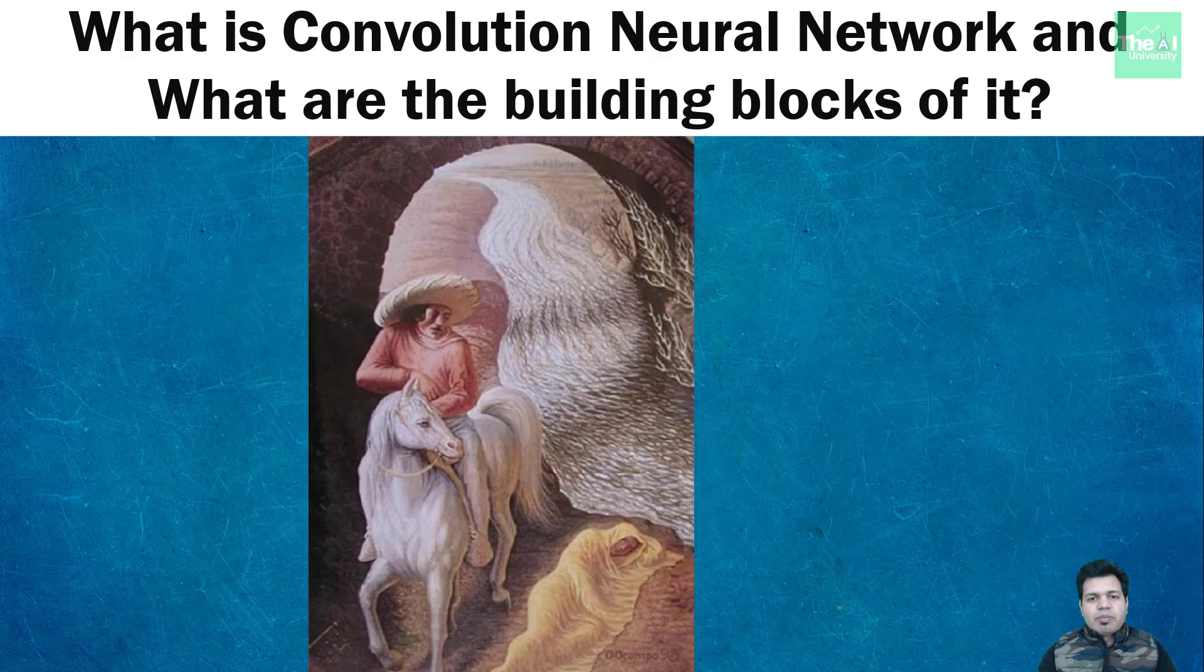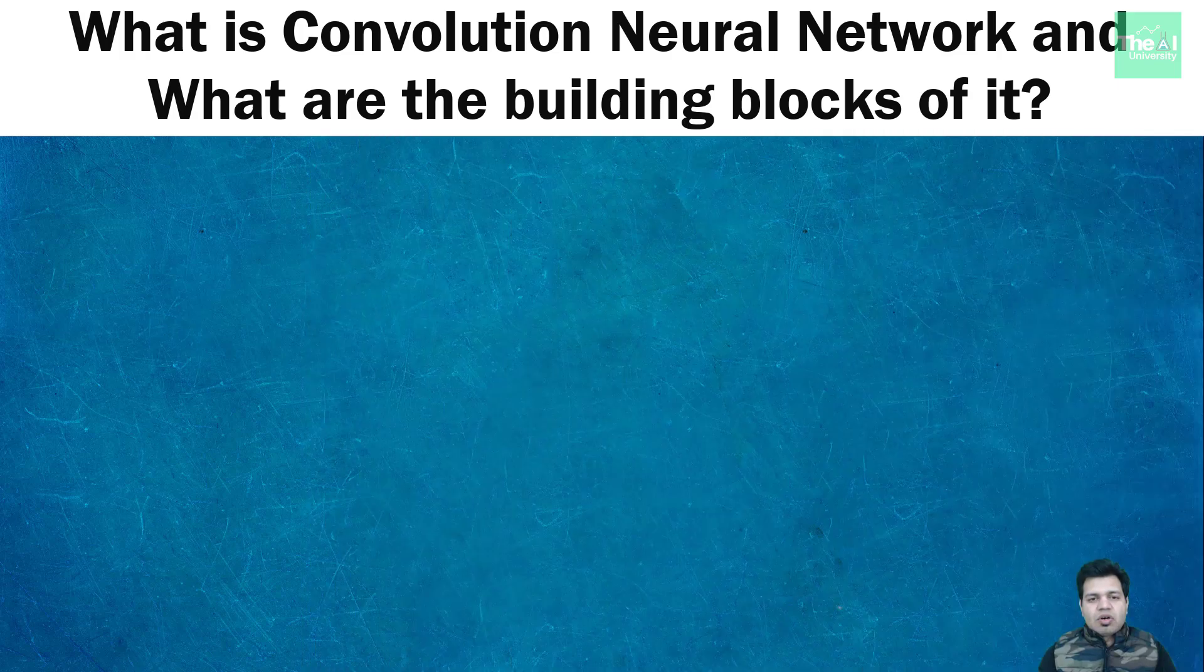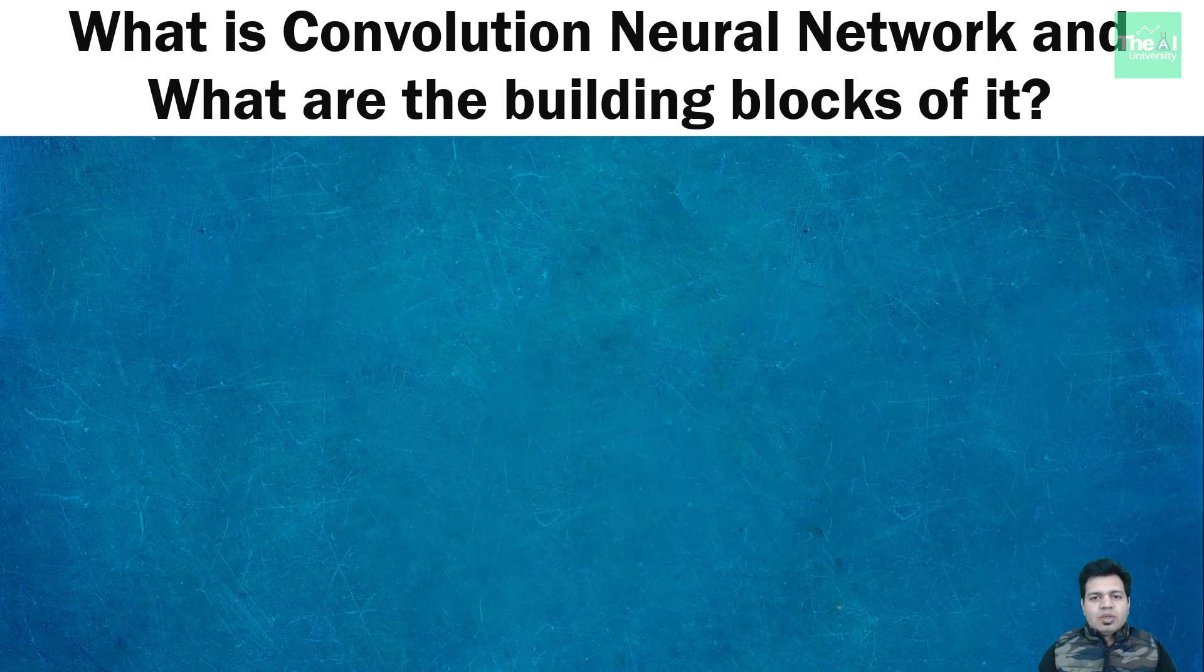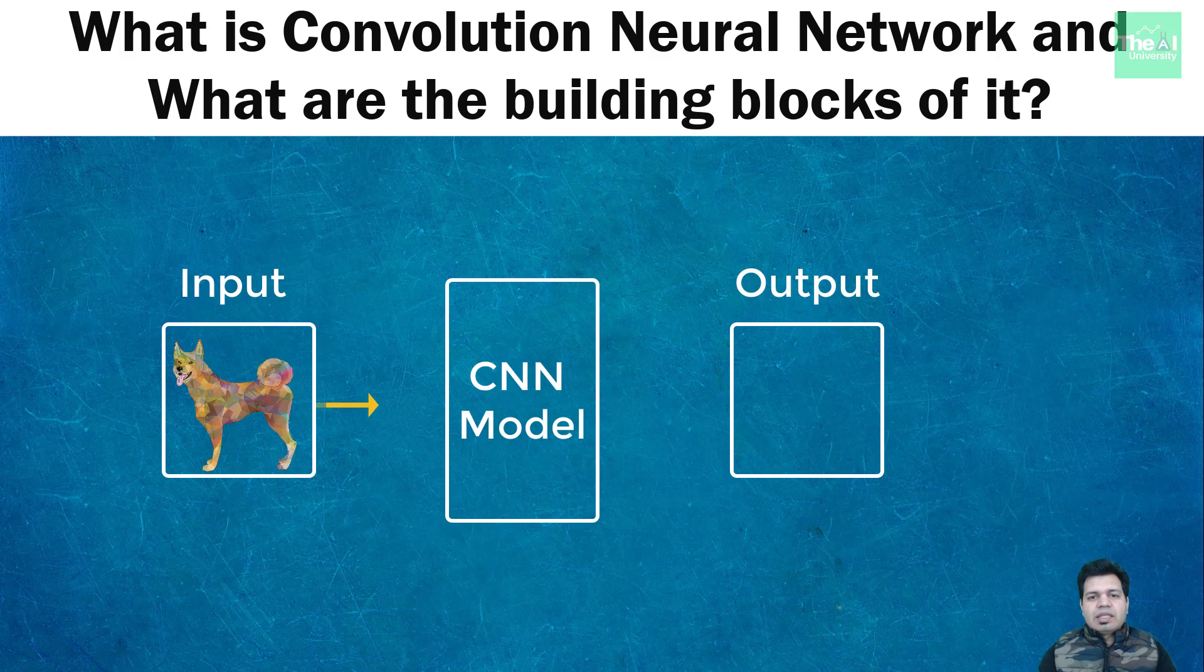Here is a simple representation of CNN or Convolutional Neural Network. You will give an input image to the CNN model, and that CNN model will extract the features of that image and classify that image as either cat or dog.